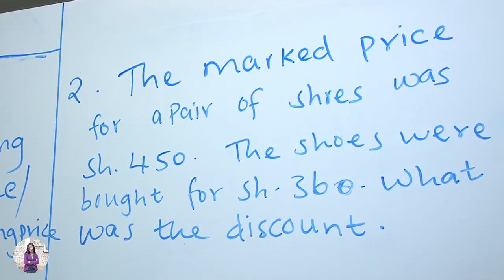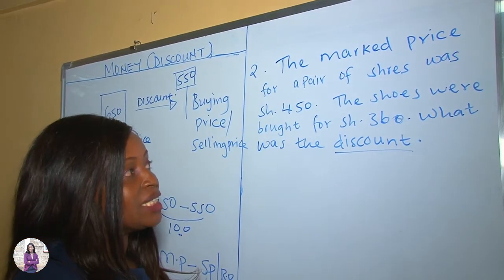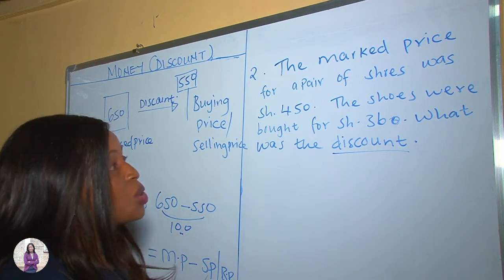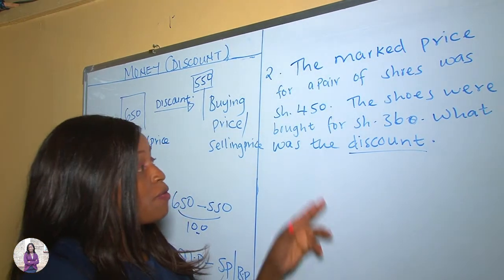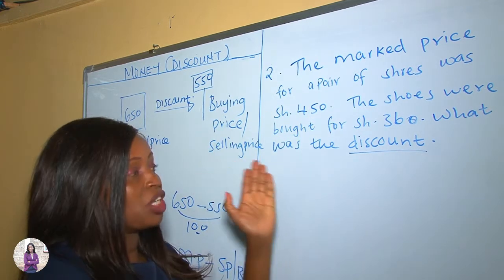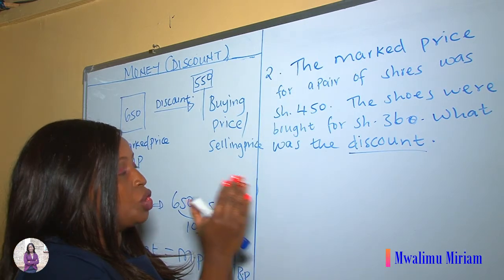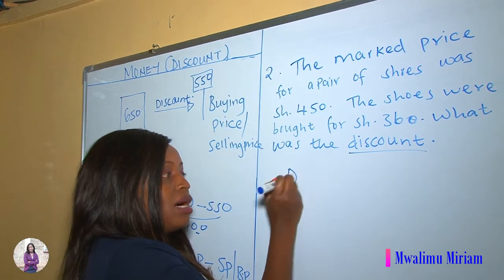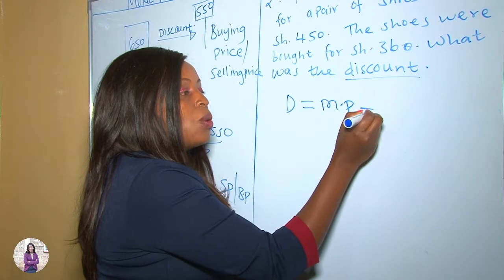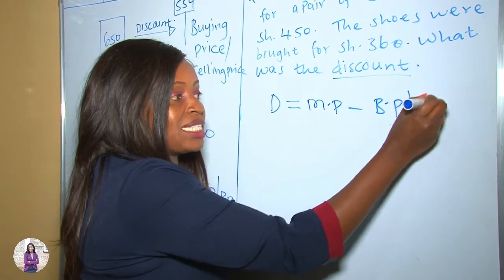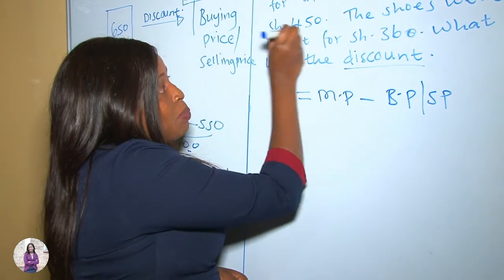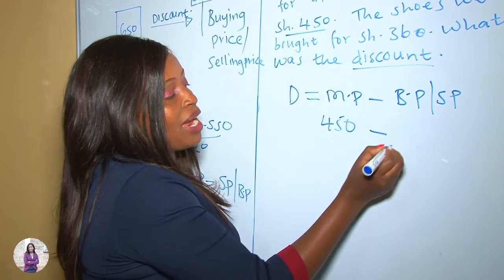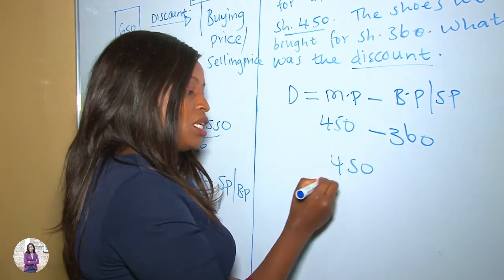In this example, the marked price for a pair of shoes was 450 shillings and the shoes were bought for 360 shillings. What was the discount? In other words, how much less did the person pay compared to the marked price? Applying the formula: discount equals marked price minus buying price, so 450 minus 360.